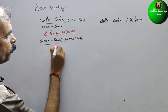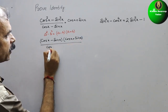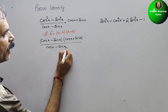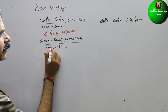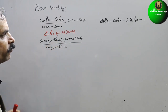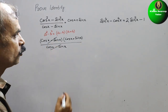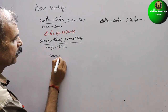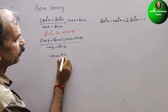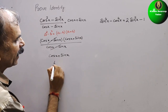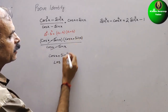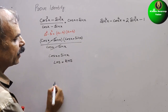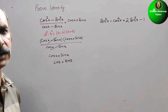And in the denominator it is cos x minus sin x. Now cos x minus sin x and cos x minus sin x — we can reduce it. So you will get cos x plus sin x. This is your LHS and RHS is also the same, so we can write LHS is equal to RHS.